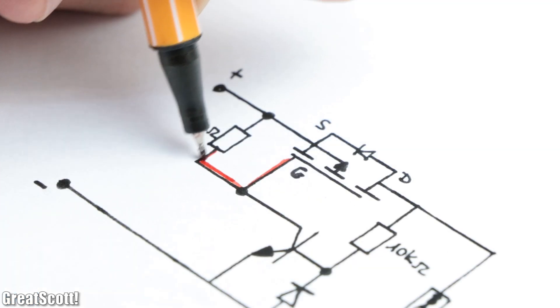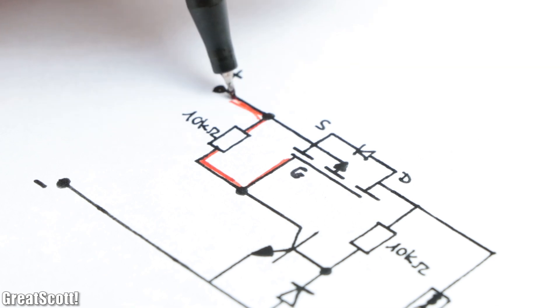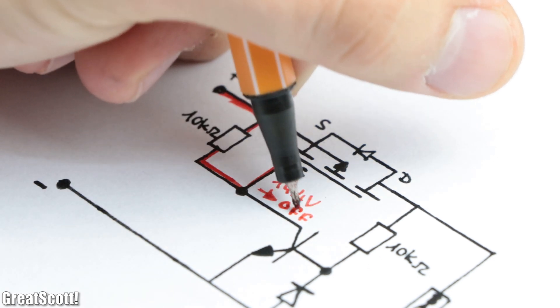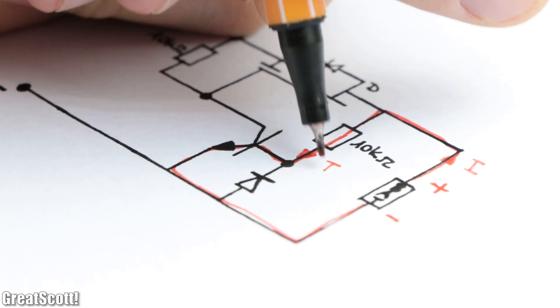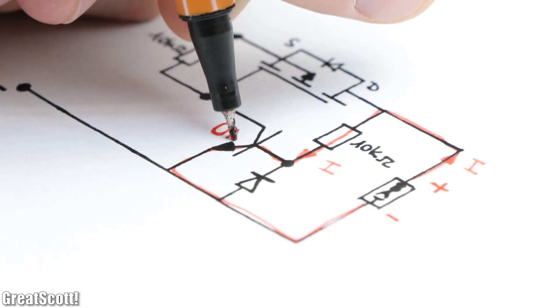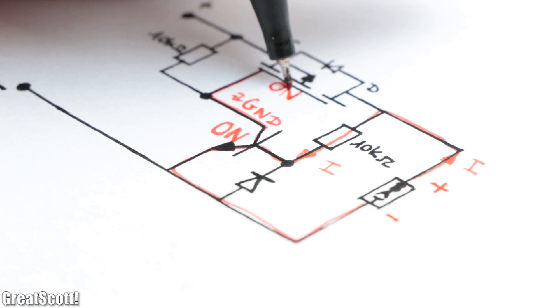His circuit basically ties the gate voltage to source with a resistor in order to keep the MOSFET normally off. And only if the battery load is connected the right way, it powers an NPN transistor, which pulls the MOSFET's gate to ground and thus turns it on.